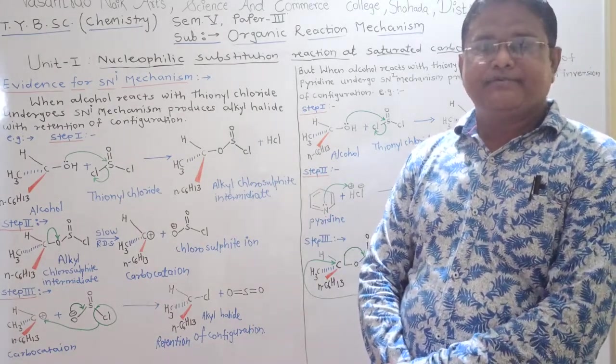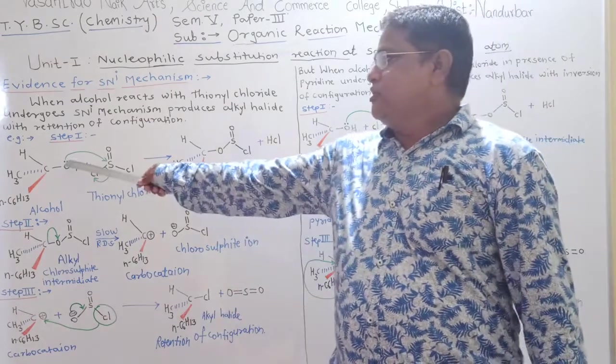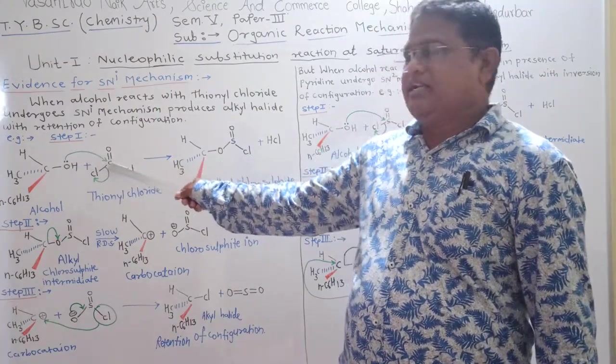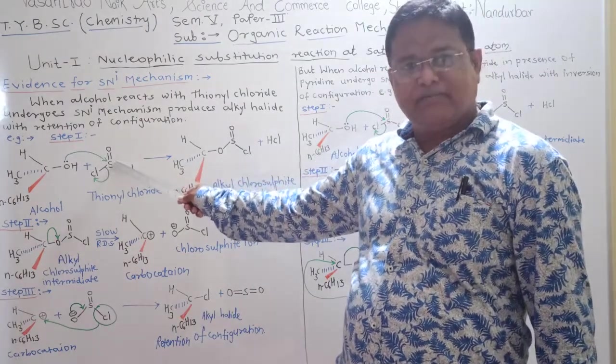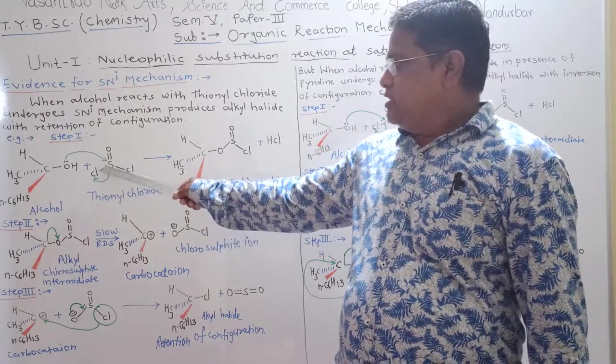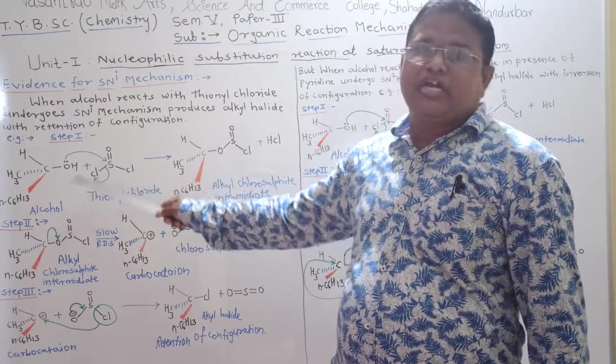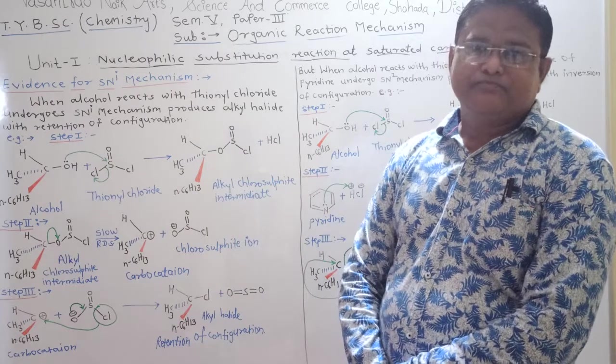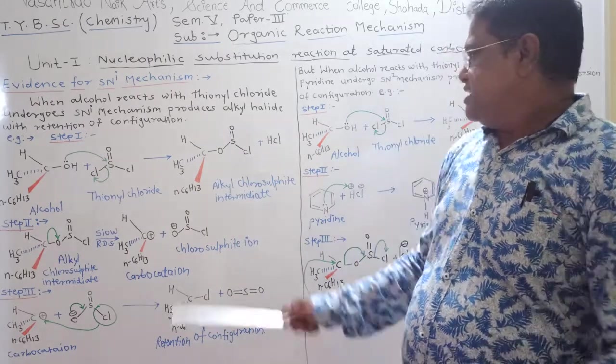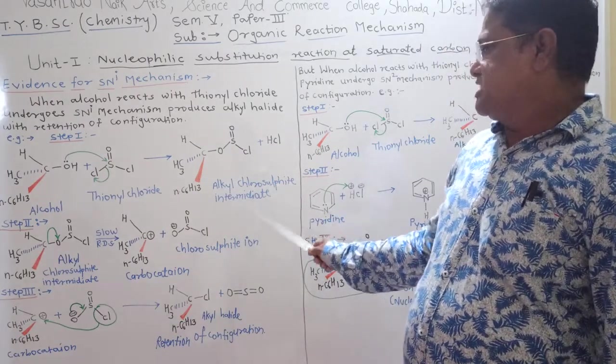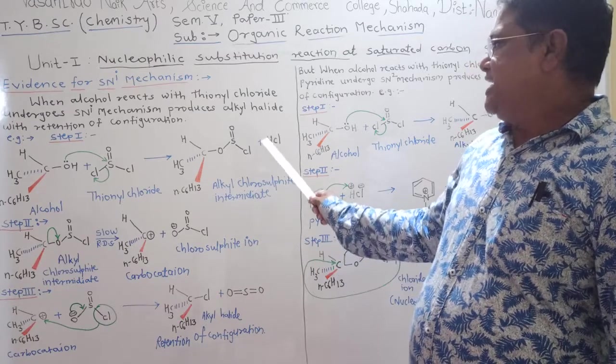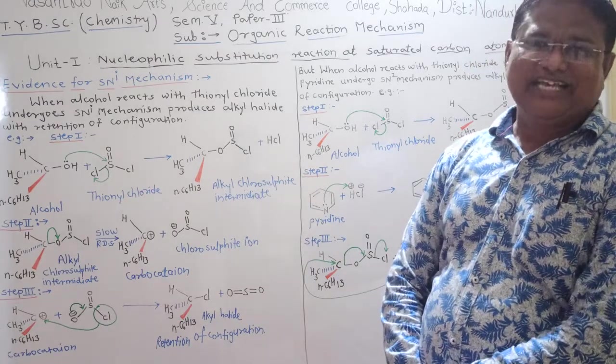In this step, the electron pair of oxygen attacks on electron deficient sulfur and chlorine leaves its position along with the bond, and produces alkyl chlorosulphite intermediate and HCl as a product.